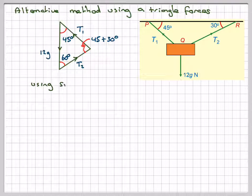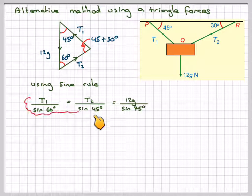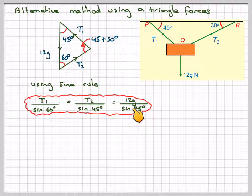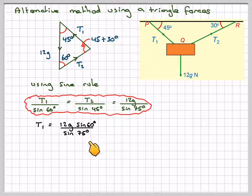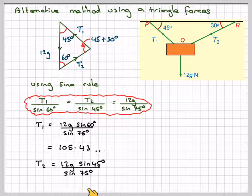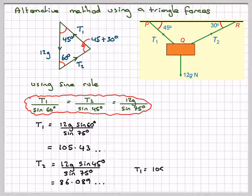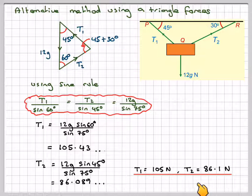And then we can use the sine rule. So using the sine rule, T1 over sin 60 equals T2 over sin 45 equals 12G over sin 75 using the sine rule. So T1 will be 12G sin 60 over sin 75, which gives 105.43, the same as before. And then T2, equating these two together, you get T2 will be 12G sin 45 over sin 75, which gives you 86.089. You get the same answer: T1 is 105 Newtons and T2 is 86.1 Newtons.